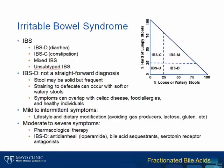There are four types of irritable bowel syndrome: IBS with predominantly diarrhea, IBS with predominantly constipation, mixed IBS with varying diarrhea and constipation, and unsubtyped IBS. We will focus today on IBS diarrhea, or IBSD. IBSD is not a straightforward diagnosis — stools may be solid but frequent, straining can occur with soft or watery stools, and symptoms can overlap with celiac disease, food allergies, and even healthy individuals. Patients with moderate to severe symptoms often require pharmacological therapies.